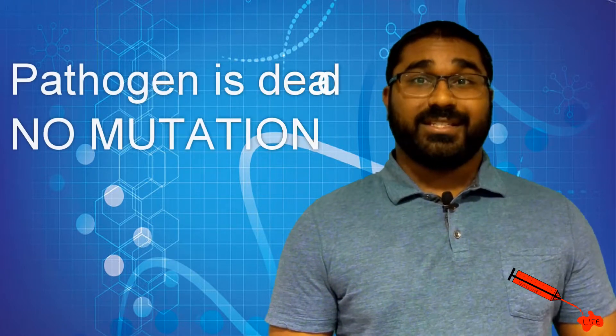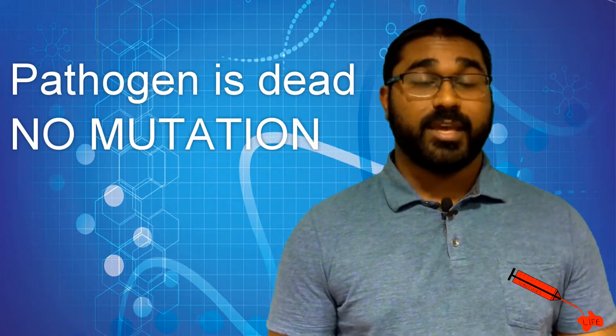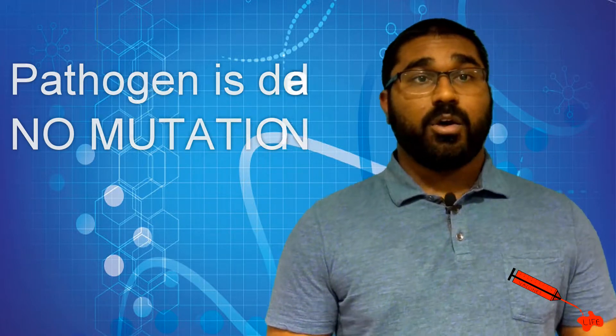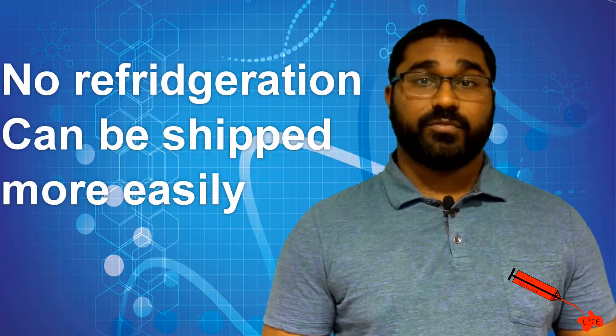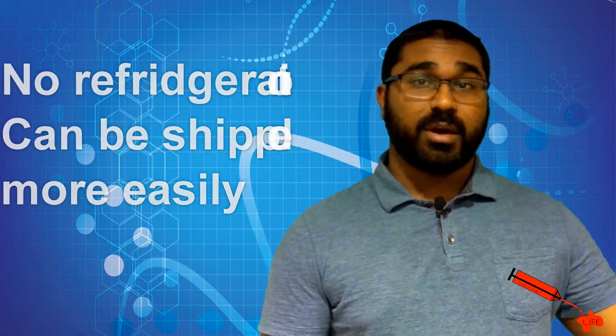So this vaccine type seems amazing, right? Well, for one thing, the pathogen is dead. So there is no potential for mutations to occur like we had with attenuated vaccines. Also, since the pathogen is dead, storage is much easier and refrigeration is often not needed. They can even be freeze dried and shipped overseas to impoverished regions that need the vaccine with ease.